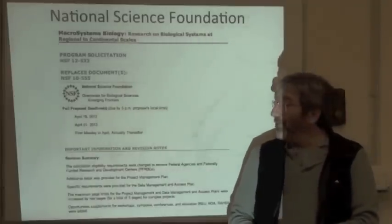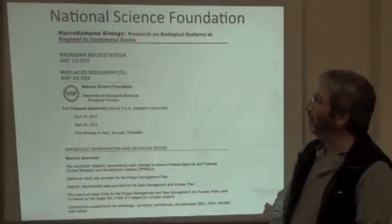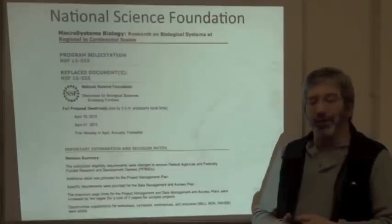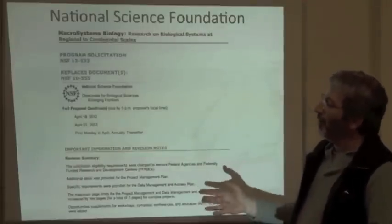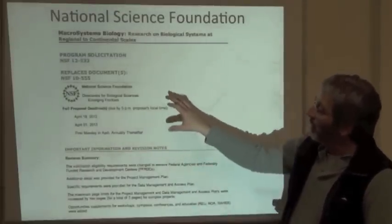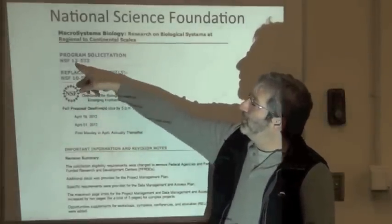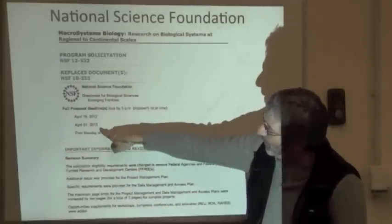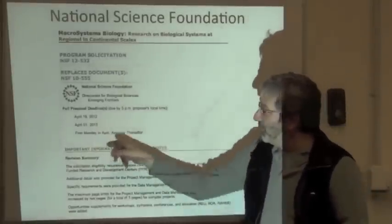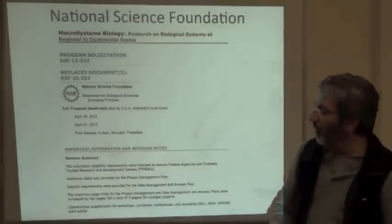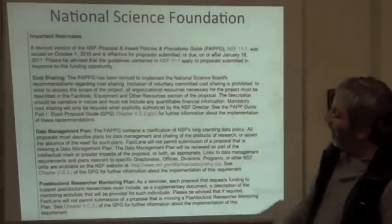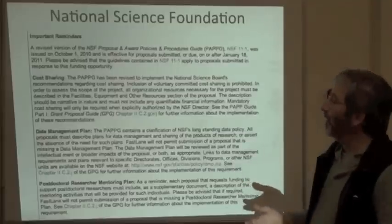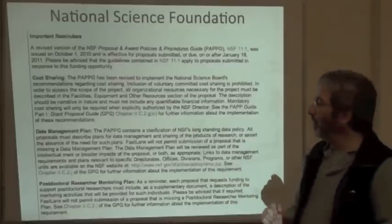Now let's look at a very different funding agency: the U.S. National Science Foundation. These are often big grants, and this is just to give you the example of what a request for proposals looks like. These are very carefully formatted — you can see this is the newest solicitation that replaces an old one. The 2013 deadline is April 1st, and after that the first Monday of April. It tells you the changes made for proposals to this program, including, for example, that a data management plan has to be provided.